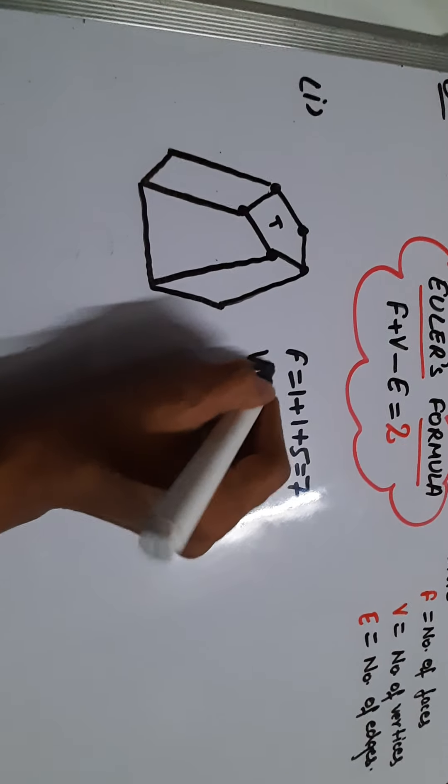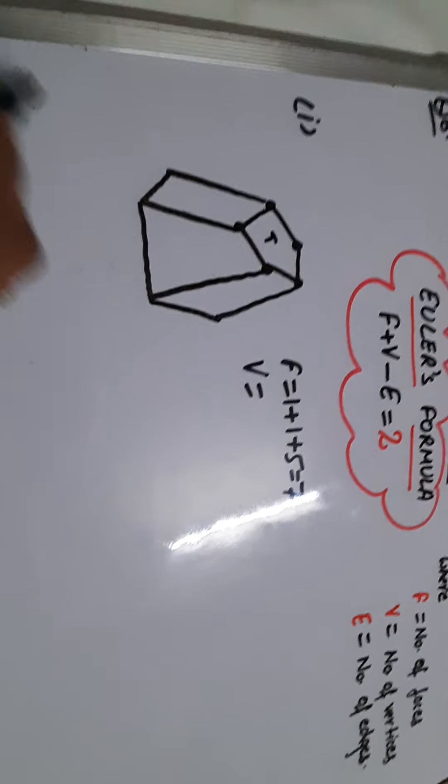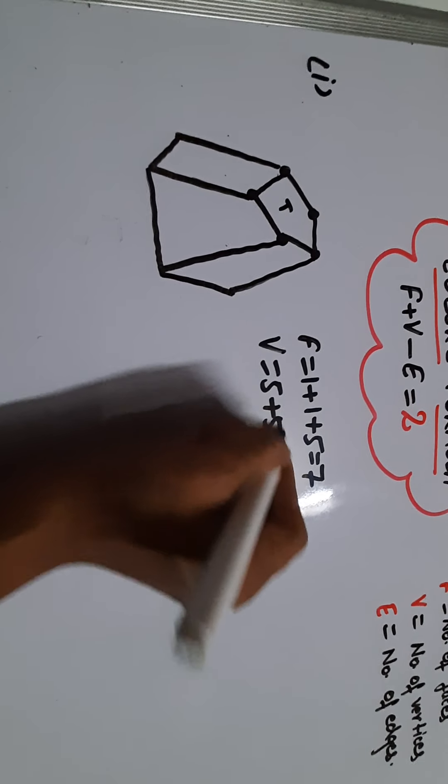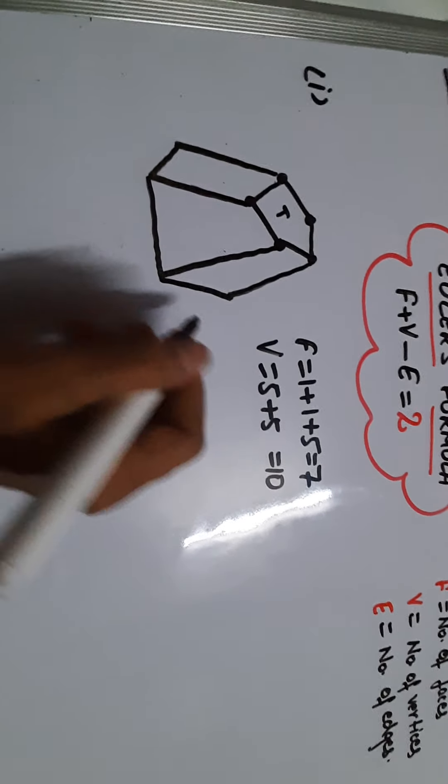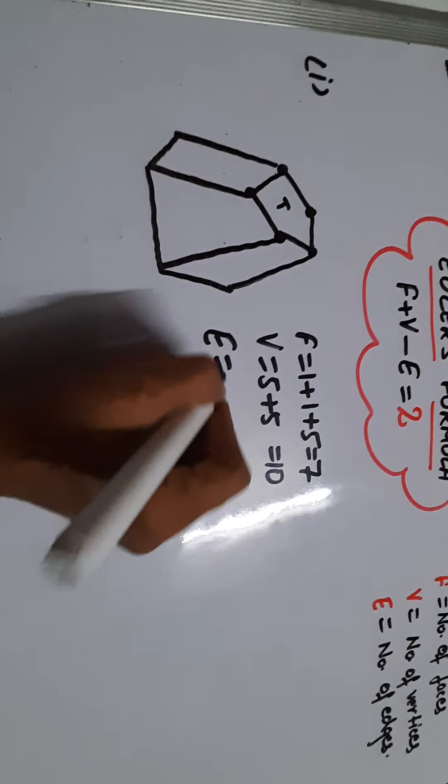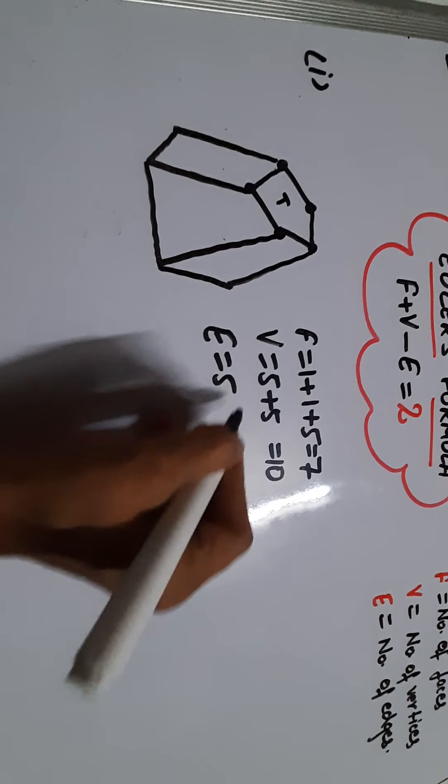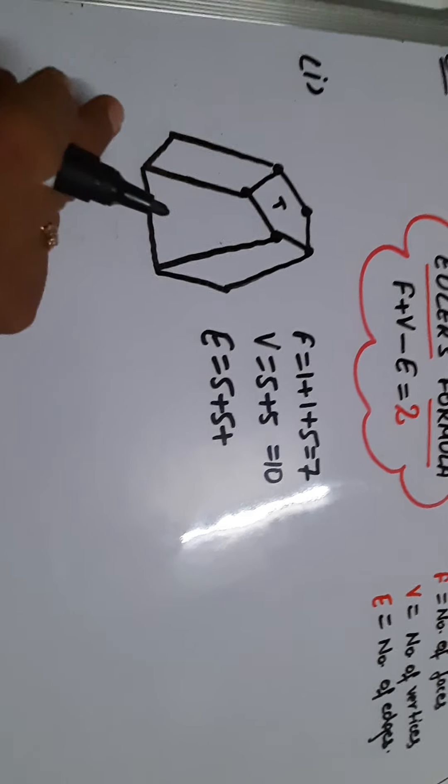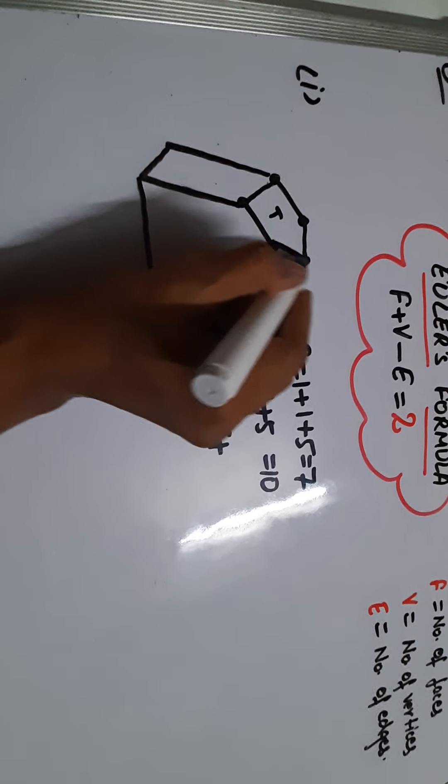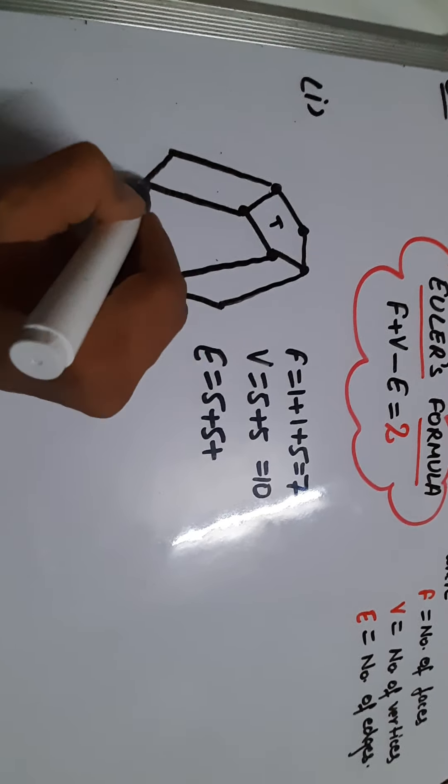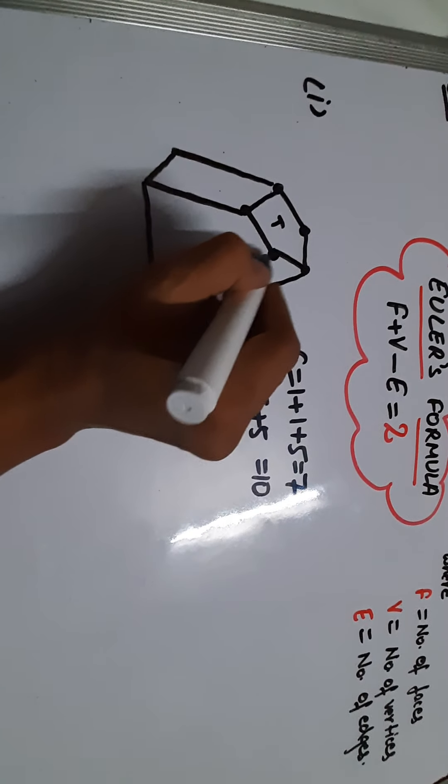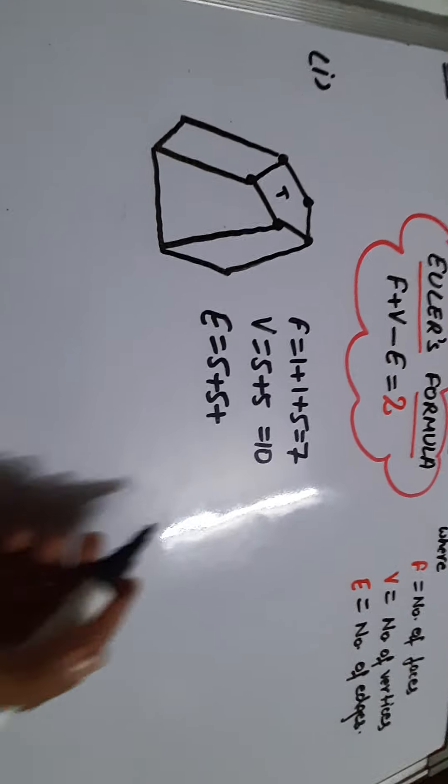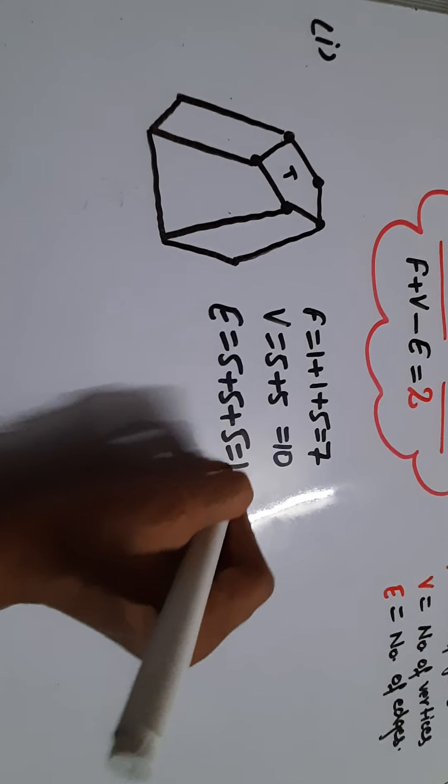Now vertices. Because pentagon, five vertices on the base and five vertices on the top in the figure you can see - one, two, three, four, five. That is ten vertices total. Now edges - five edges on the base, five on the top, and as you can see, the height edges connecting them are one, two, three, four, five. So five plus five plus five equals fifteen edges will be there.